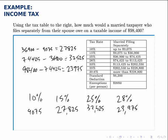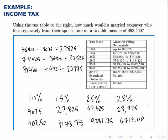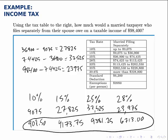The next step is to figure out how much gets taxed from each bracket. In the first bracket there's $9,075, and 10% of that is $907.50. Similarly, 15% of $27,825 is $4,173.75. 25% of $37,525 is $9,381.25. And 28% of $23,975 is $6,713.00. This is how much gets taxed from each bracket, and the total tax owed is the sum of these four numbers.